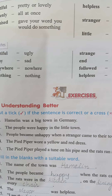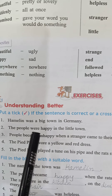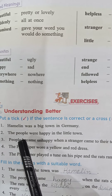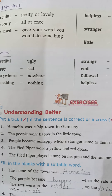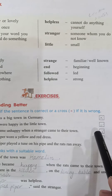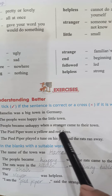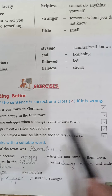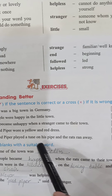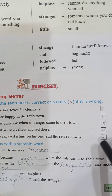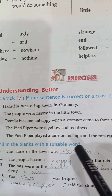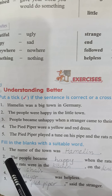We have to read all the stories in our mind and fill in the answers. Hamilton was a big town in Germany — cross. The people were happy in the little town — tick. People became unhappy when a stranger came to their town — cross. The Pied Piper wore a yellow and red dress — tick. The Pied Piper played a tune on his pipe and the rats ran away — tick.